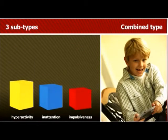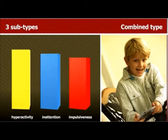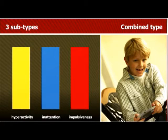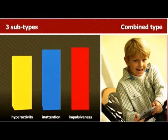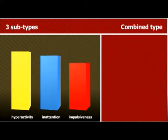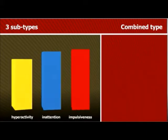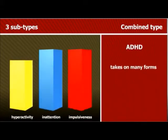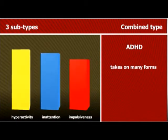Finally, many children belong to the combined type, which includes the characteristics of the first two. These children display varying degrees of attention problems, impulsive behavior, and hyperactivity. Clearly, ADHD can take on many forms.